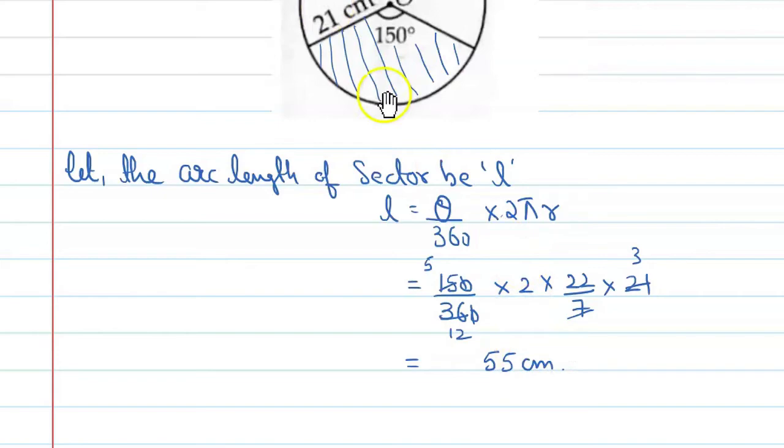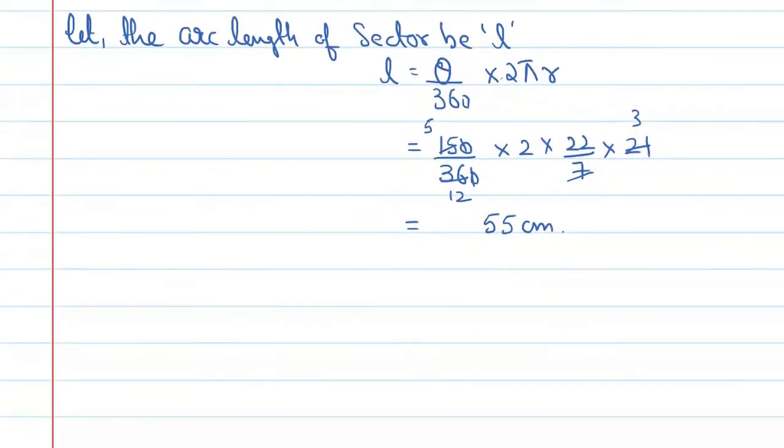Now, we will find the area of the sector. So, area of sector is represented by A equal to theta upon 360 into pi R square.